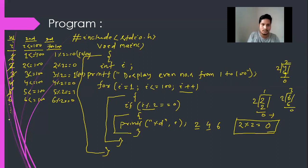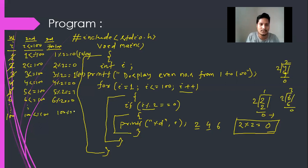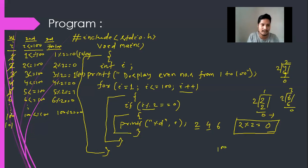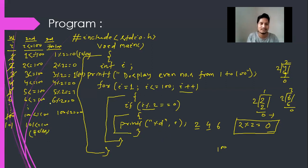Similarly, this will go up to 100. 100 less than equal to 100 — yes, this is true, either less than or equal to. Then 100 modulo division 2 equals 0, so finally 100 will be printed. Then i will be incremented to 101. 101 less than equal to 100 — is it true? No, this is false. So no further statements will be printed. The even numbers have already been printed in the output screen.